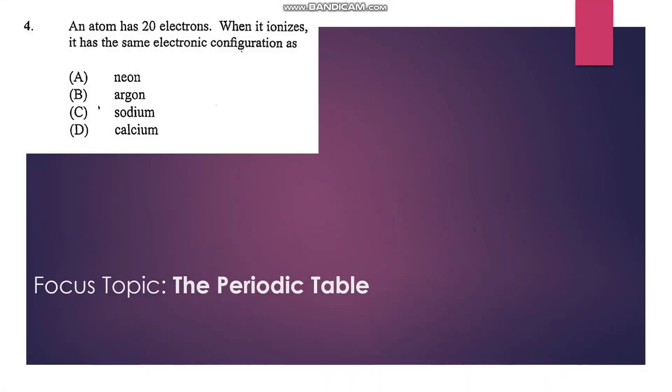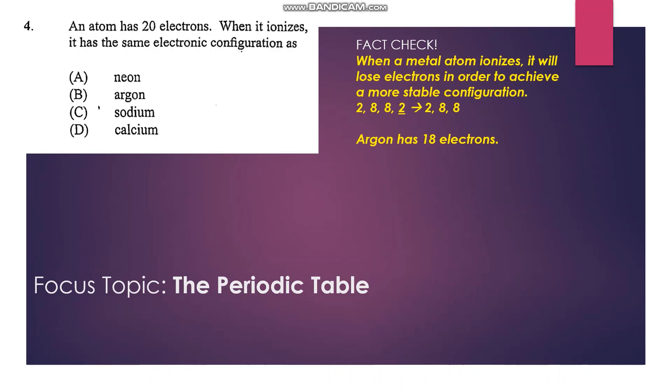Number 4: an atom has 20 electrons. When it ionizes, it has the same electronic configuration as... For an atom with 20 electrons, the electronic configuration would be 2, 8, 8, 2, and therefore it would lose 2 electrons to become stable. Therefore its stable electronic configuration will become 2, 8, 8, and that's the electronic configuration of argon, so our answer would be argon, that's B.